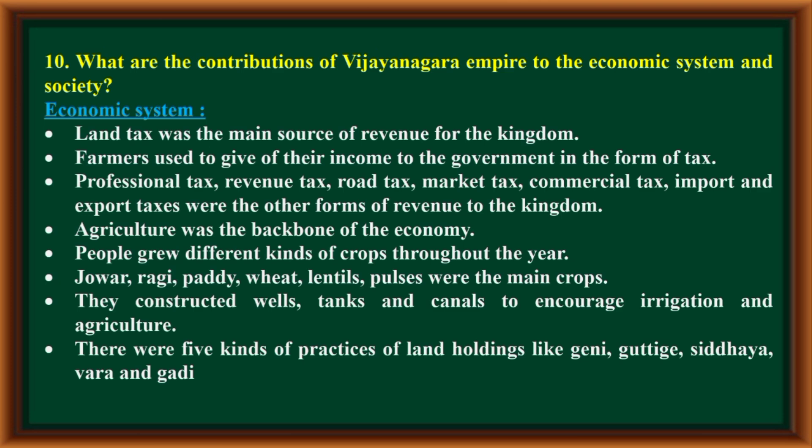What are the contributions of the Vijayanagara Empire to the economic system and society? Economic system: Land tax was the main source of revenue for the kingdom. Farmers used to give a portion of their income to the government in the form of tax. Professional tax, revenue tax, road tax, market tax, commercial tax, and import and export taxes were the other forms of revenue.